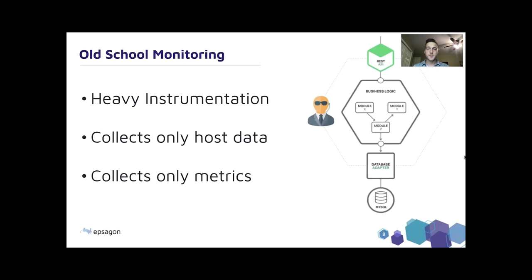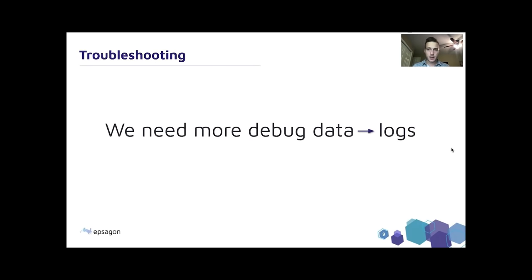Traditional monitoring solutions come at the expense of higher resource utilization, have the ability to only collect host metrics, or are purely a metric-driven solution only. The very nature of Docker means this is likely to leave gaps in coverage with your observability strategy. Metrics only let us know that something has broken, but not the where or the why. Context is absolutely critical in today's environments. To effectively troubleshoot, we need more data — but are logs sufficient, and what gaps in coverage are most often seen when relying only on logs?